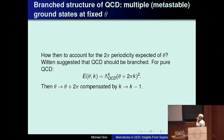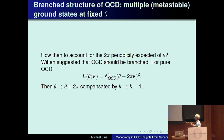The puzzle then is what about the 2-pi periodicity you expect in theta. What Ed suggested is that could be accounted for if, for example in the pure gauge case, the energy as a function of theta looks like lambda QCD to the fourth times a minimum over k of theta plus 2 pi k squared. If I shift theta by 2 pi, I can compensate that by a shift in k, k goes to k minus 1.